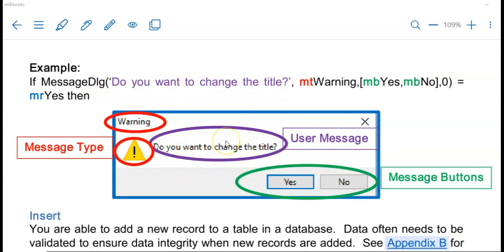So I can say if the message dialogue box and then the first argument here, that is the wording that will appear here on the message dialogue box. Then I comma, then I put the mtWarning or mtInformation. Now this mt means message type and that is what determines the message at the top here as well as the icon that will be placed on this message dialogue box.